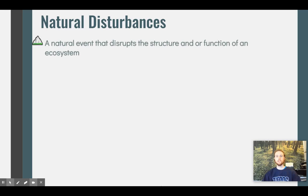A natural disturbance is a natural event that disrupts the structure and/or the function of an ecosystem. It's going to interrupt energy and matter cycling through the ecosystem, it may displace organisms, and it may totally reshape or even destroy the ecosystem or the habitat.